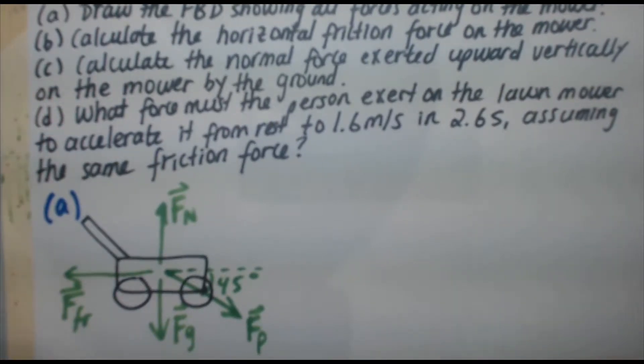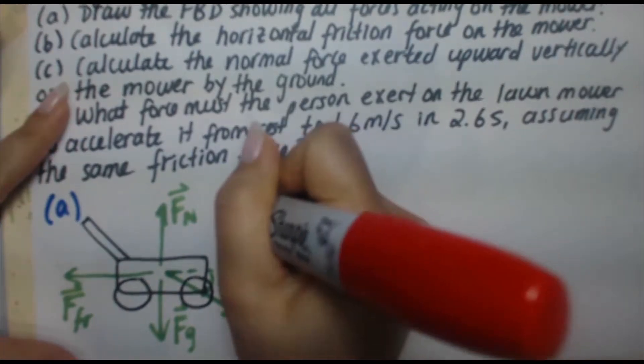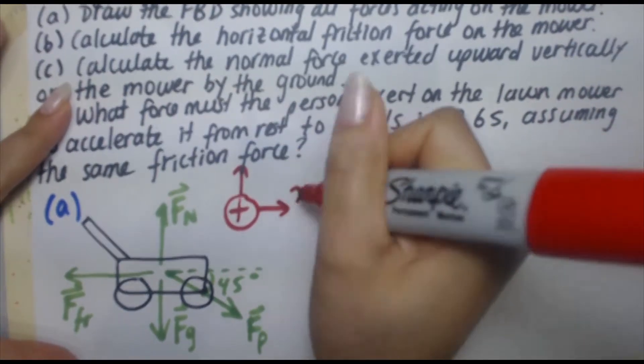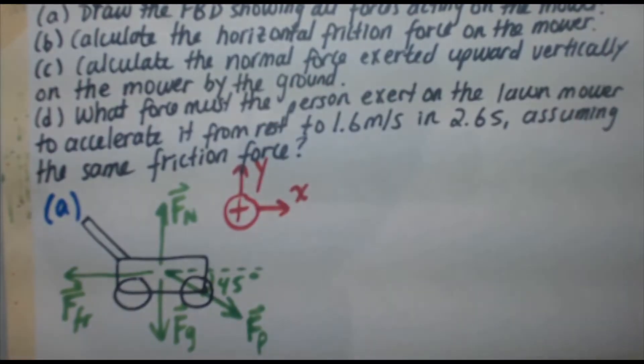This is going to come in real handy later. Okay, so there's our free body diagram. That's the answer to part A. Now, although it was not required in this part, I'm going to go ahead and define my positive directions because I'm going to need them regardless. So I'm going to let positive be up and to the right.